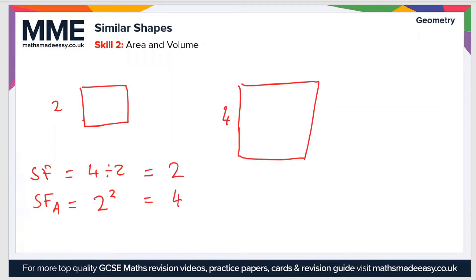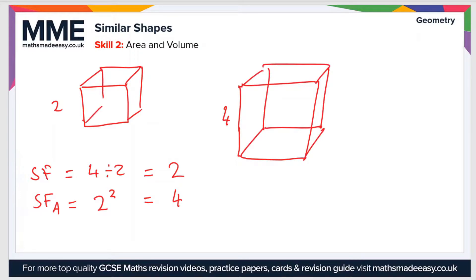And then finally, if we wanted to work out what the volume scale factor was — so if we had two cubes, for instance — the volume scale factor is found by cubing the linear scale factor, which would give us 8.